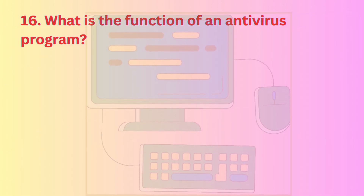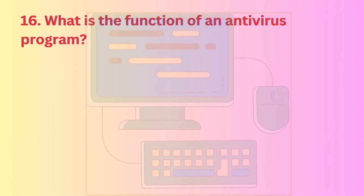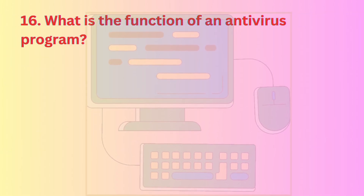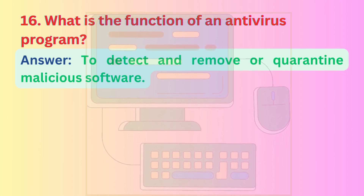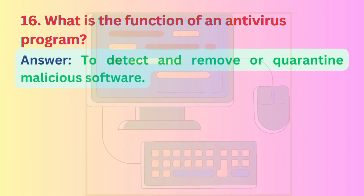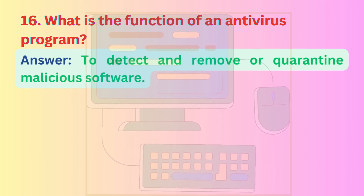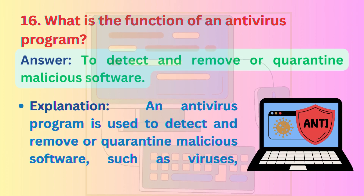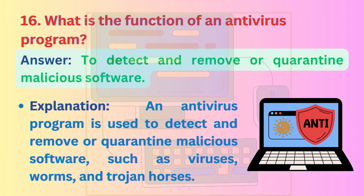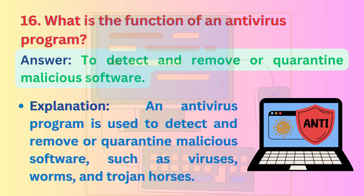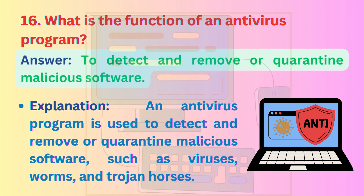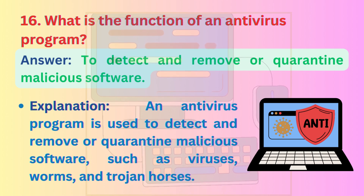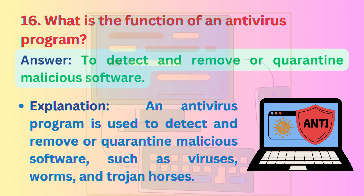Question 16: What is the function of an antivirus program? Answer: To detect and remove or quarantine malicious software. Explanation: An antivirus program is used to detect and remove or quarantine malicious software, such as viruses, worms, and Trojan horses.